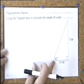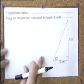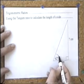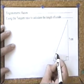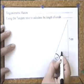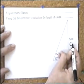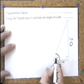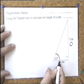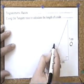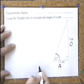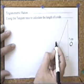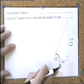Using the tangent ratio to calculate the length of a side. In this triangle, I'm going to be working with this angle. That's going to be the opposite because it's opposite the angle I'm working with. This is the adjacent because it's next to it. Someone might argue the hypotenuse is also next to it — but we know it's the hypotenuse because it's the longest side, so that's the adjacent.